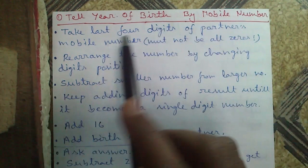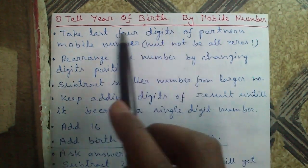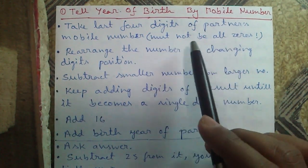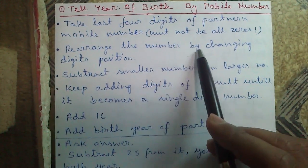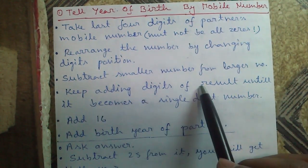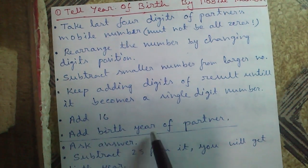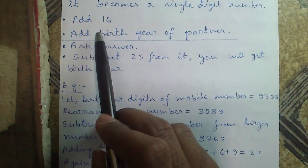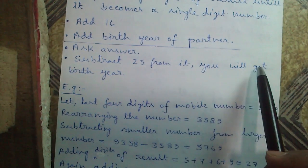Trick one: Tell year of birth by mobile number. Give your calculator to your partner and tell him or her to take the last 4 digits of their mobile number — must not be all zeros. Rearrange the number by changing digit positions. Subtract the smaller number from the larger number. Keep adding digits of the result until it becomes a single digit number. Now add 16 to that and add the birth year of your partner.